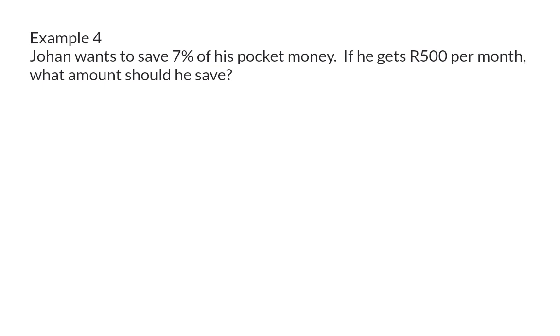Example 4. Johan wants to save 7% of his pocket money. If he gets 500 Rand per month, what amount should he save? This time, the percentage is given again, and the ratio will then be 7 to 100. However, his pocket money is 500 Rand a month, so the right-hand side was multiplied by 5, and we need to repeat that on the left. 7 times 5 is 35, which means that Johan should save 35 Rand of his pocket money each month.